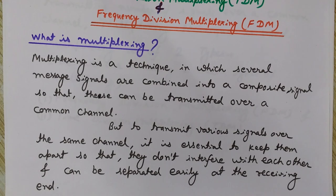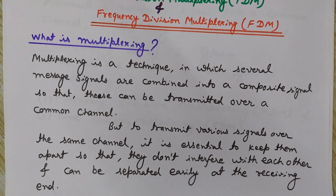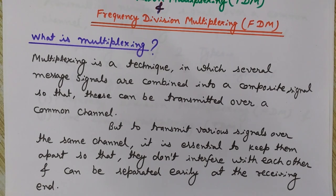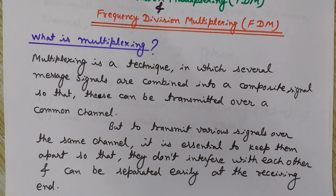There are two types of multiplexing: time division and frequency division multiplexing. There are benefits and drawbacks of each technique, and we will discuss both — how we can use multiplexing to transmit many signals as a composite signal over a common channel.